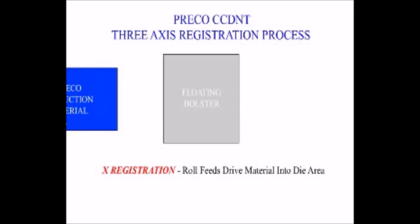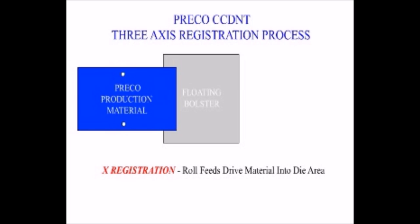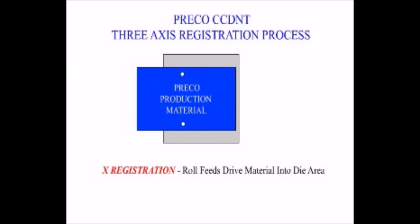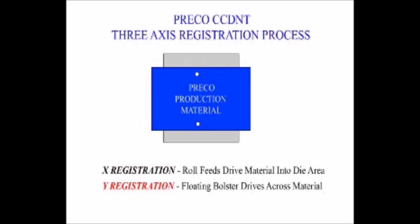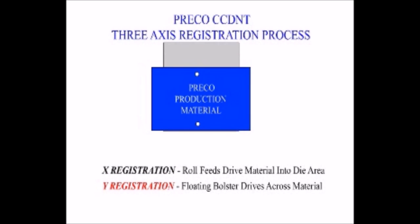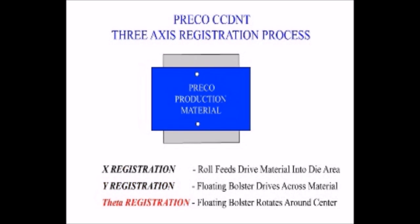The roll feeds drive the production material in the X dimension until the X registration mark is positioned perfectly under the operator side CCD camera. The floating bolster then drives the die and cutting plate across the press in the Y dimension until the Y registration mark is positioned perfectly under the operator side CCD camera.